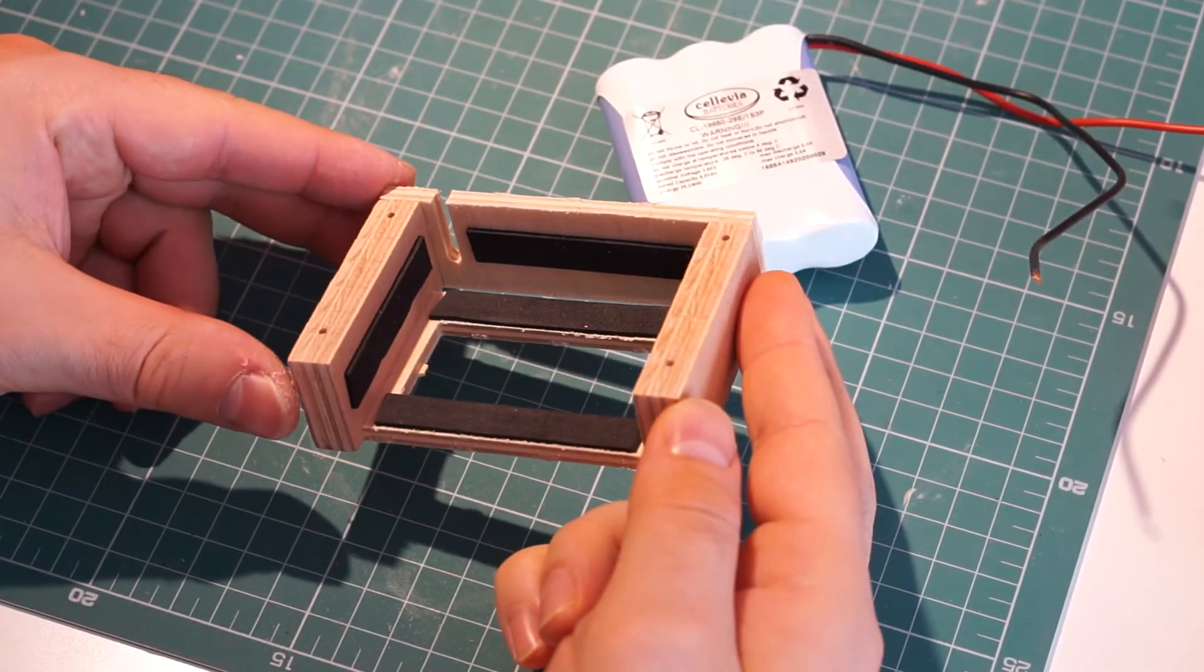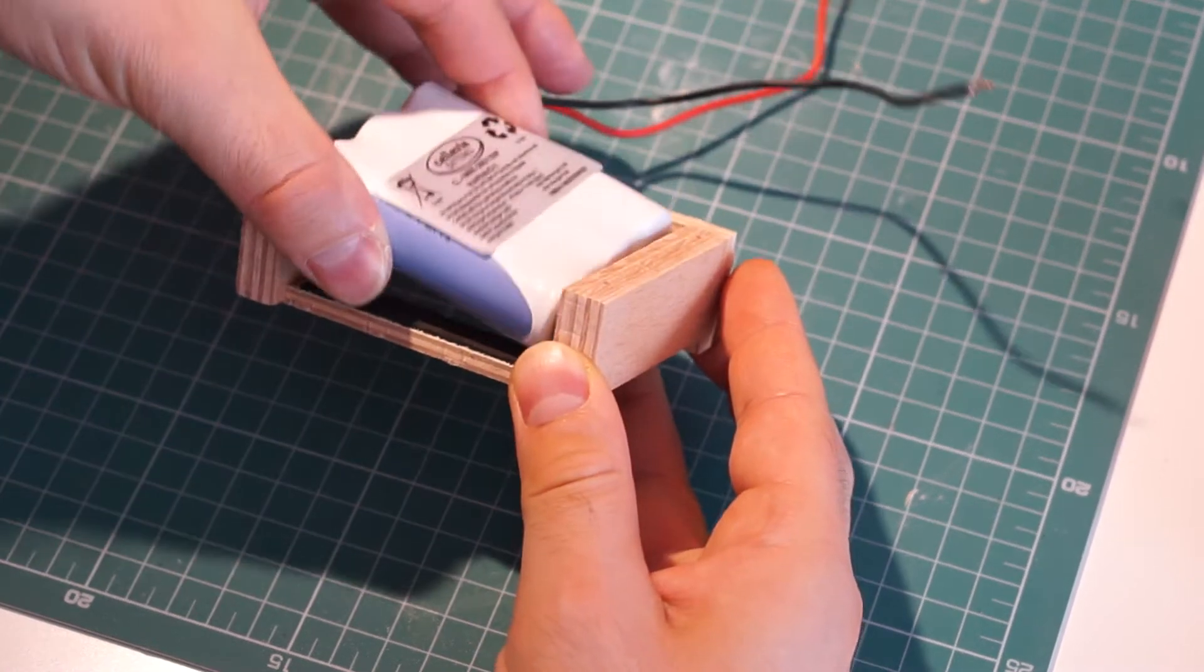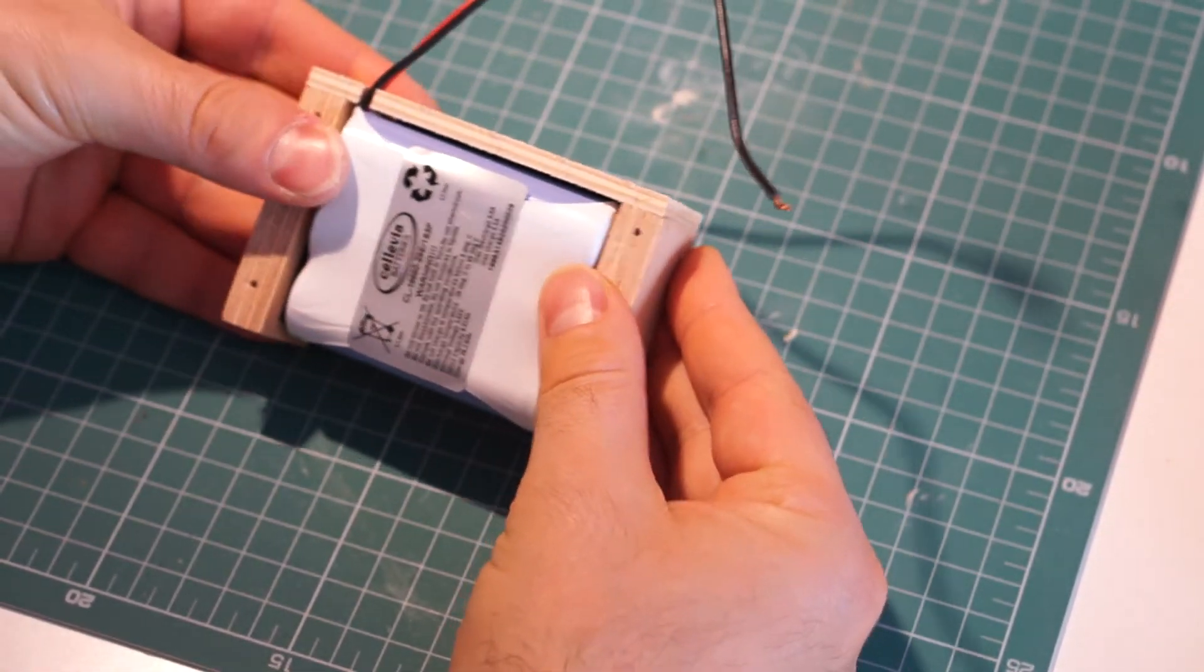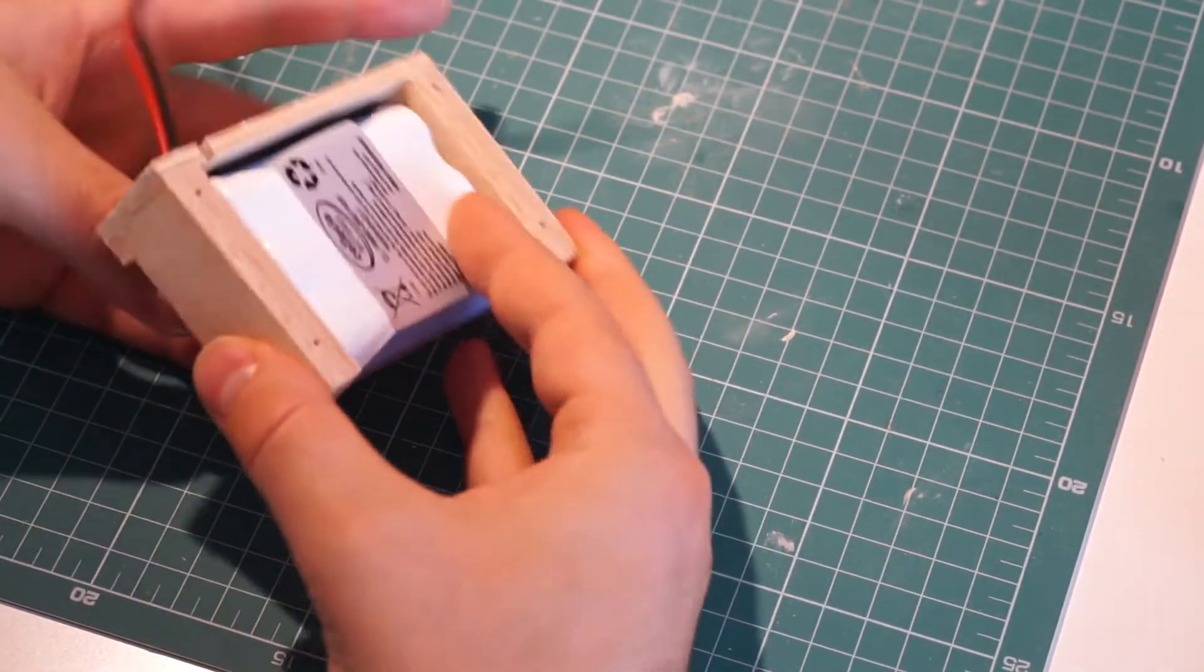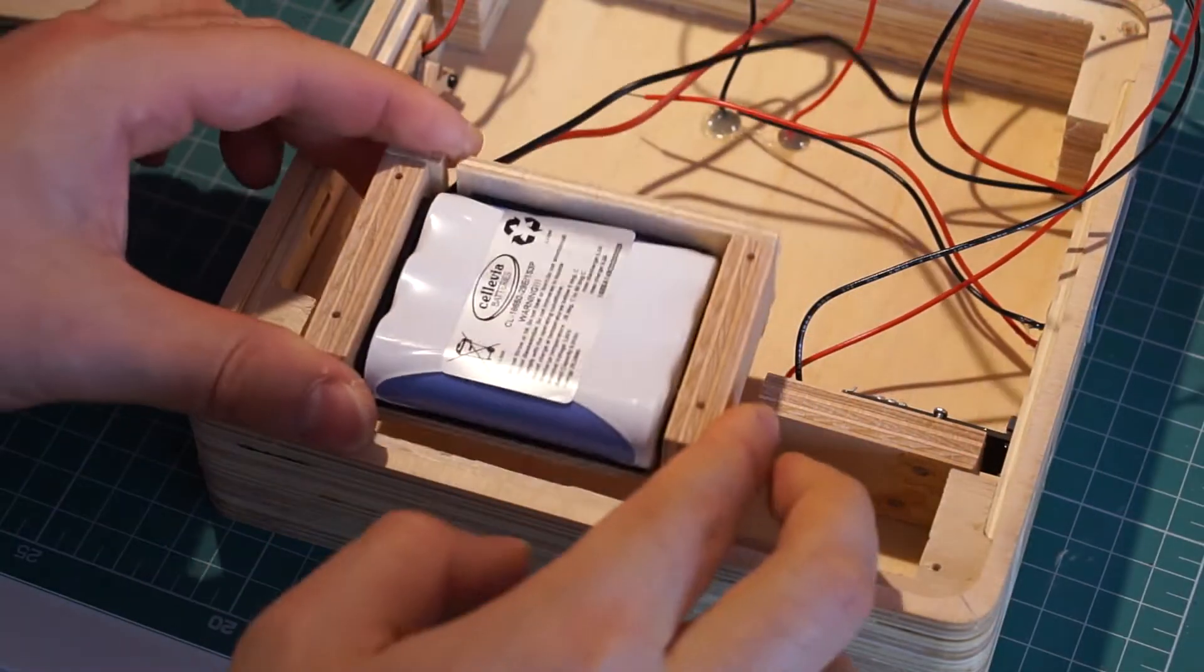For the battery, I made this holder and lined all the inner sides with foam tape. This is to make sure that the battery doesn't move and protects against damage in case the power bank falls on the floor.